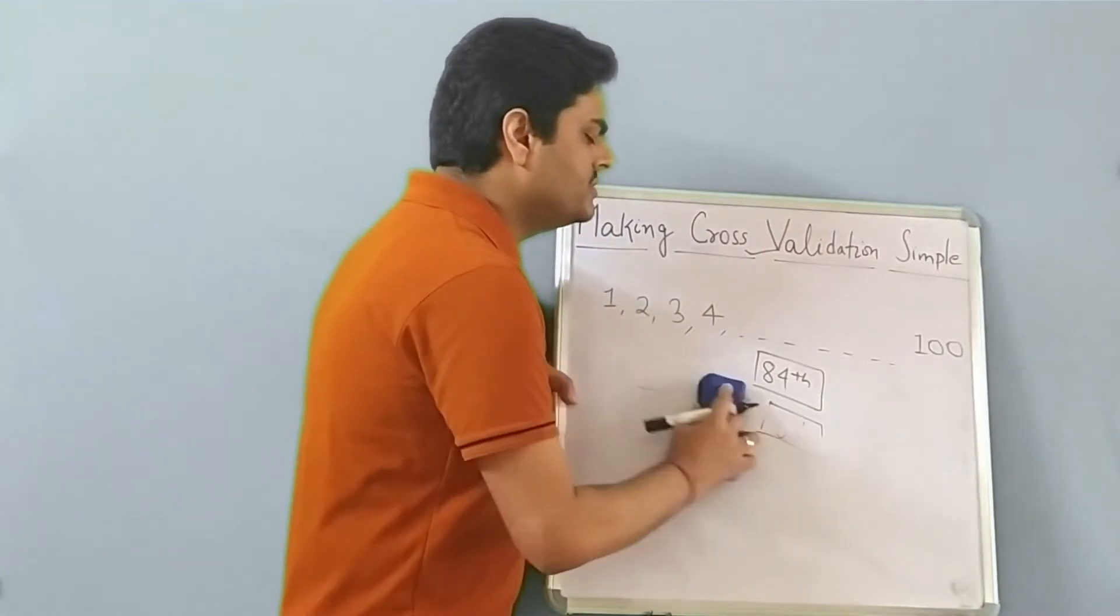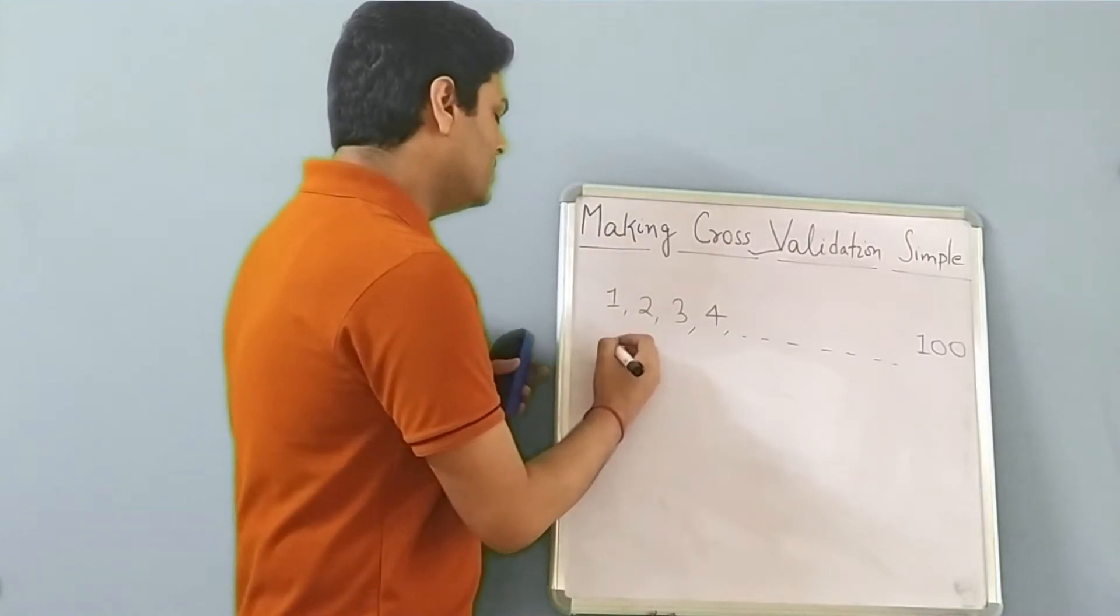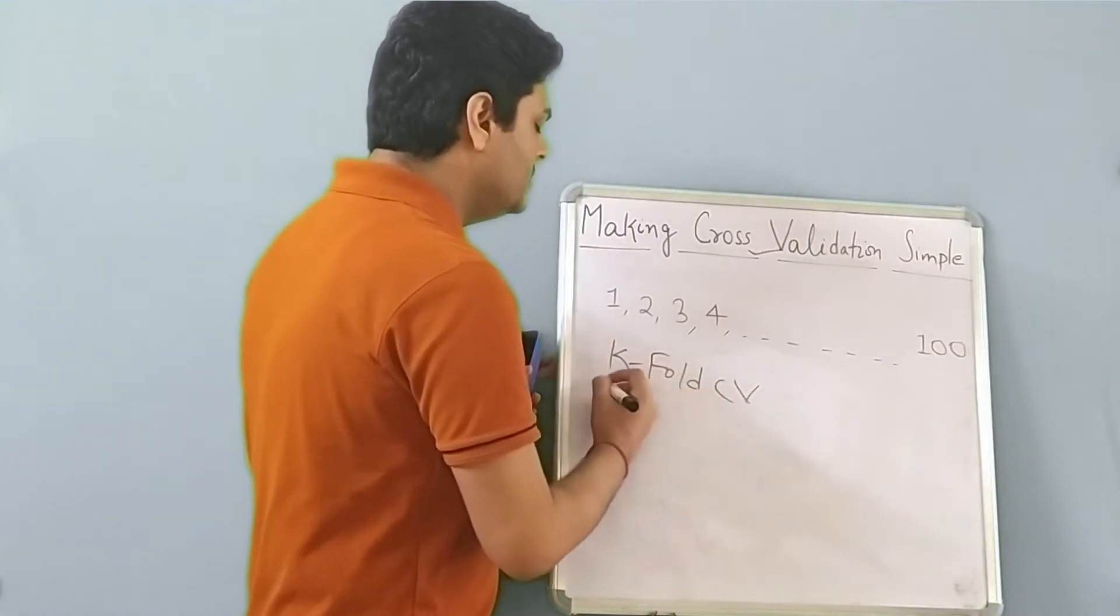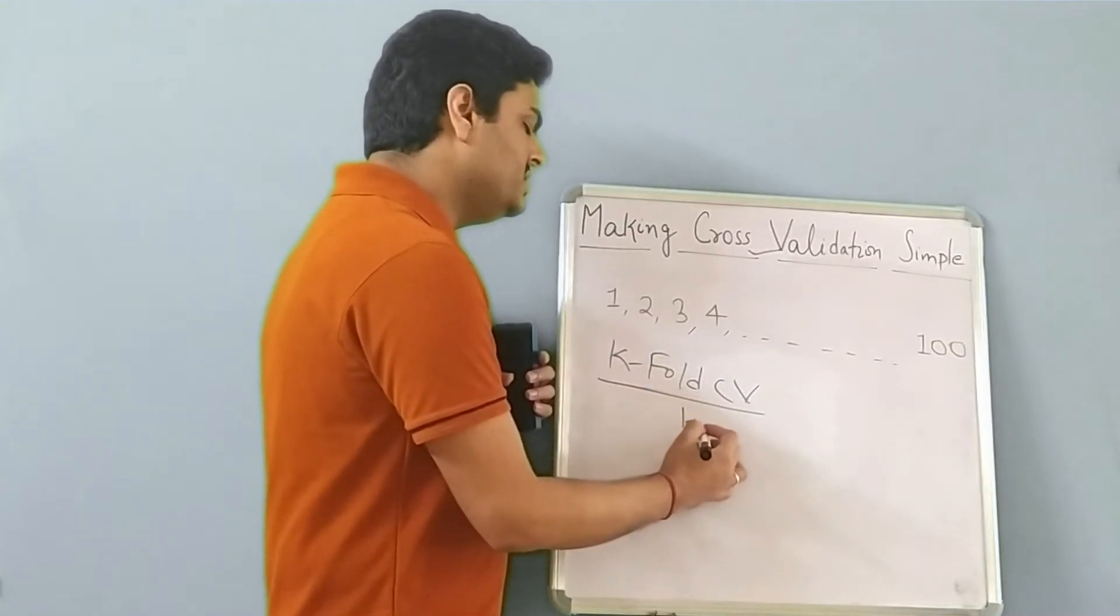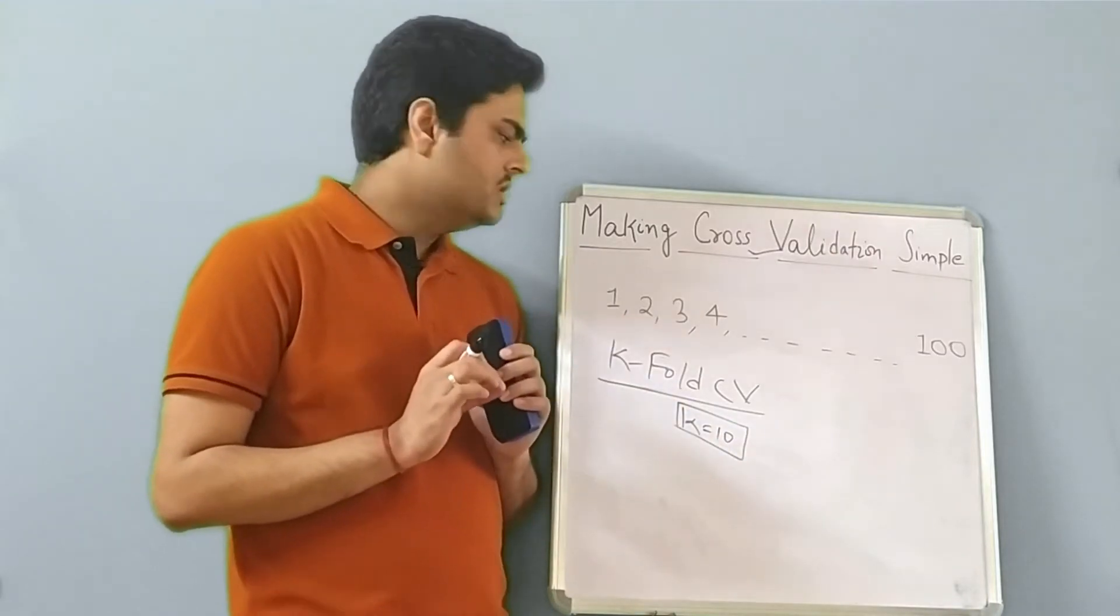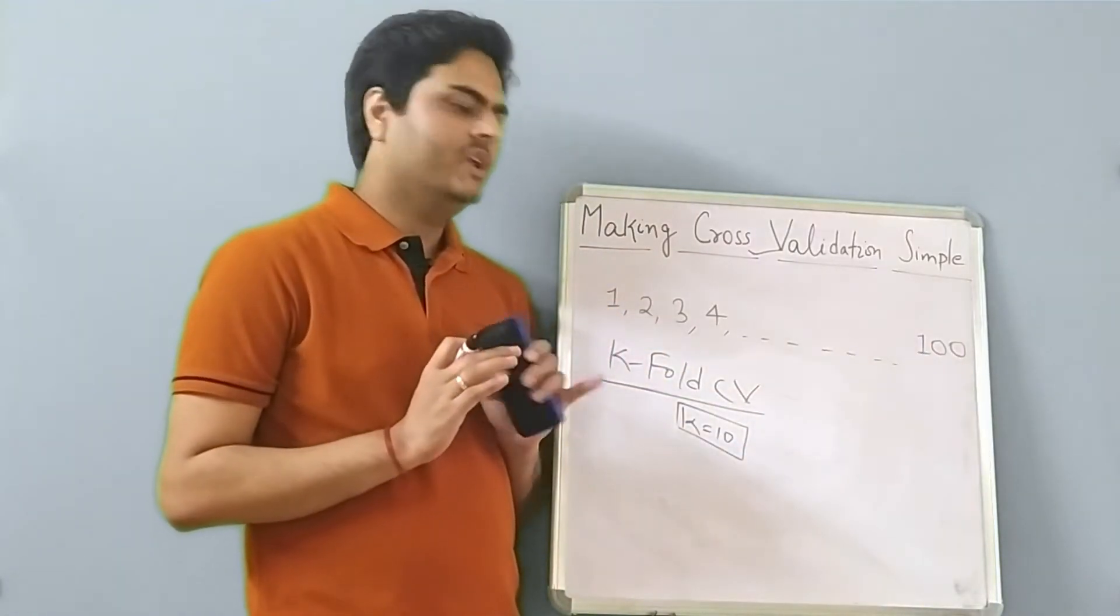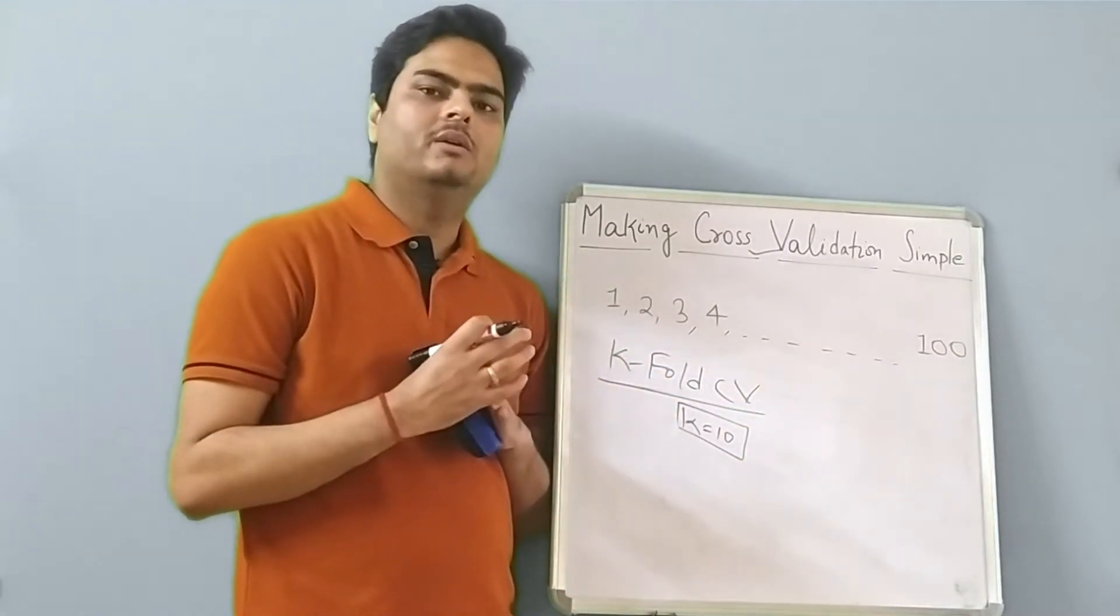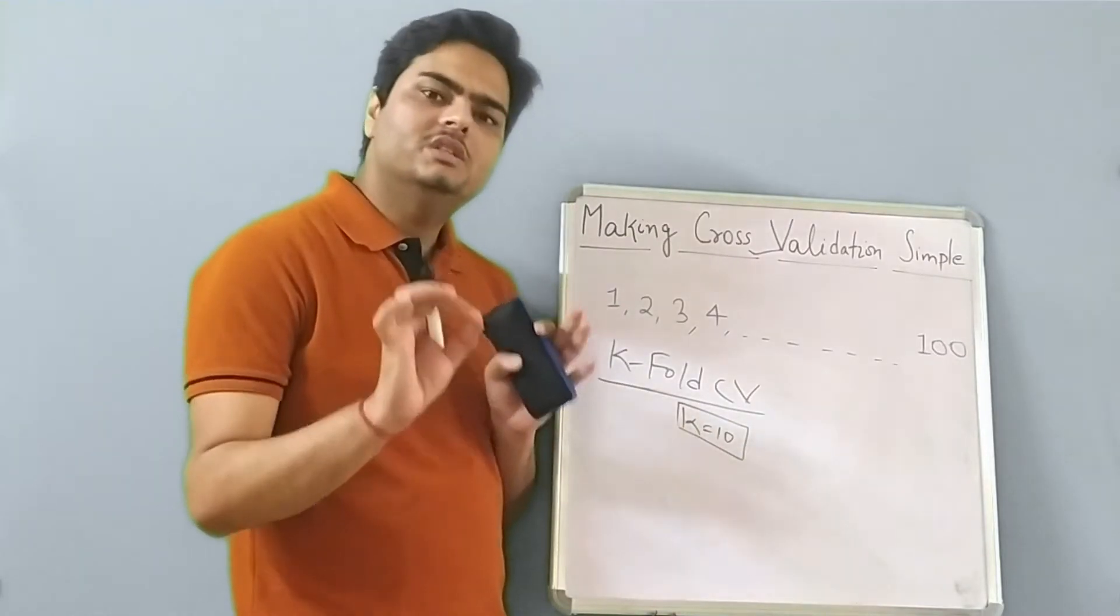All of you would have heard of something known as K fold cross validation. So what is K fold cross validation? K fold CV. So in K fold CV, K stands for an integer. Let's say in our case, for simplicity, K is 10. So what will happen in this approach is the 10 buckets of data will get created from this main data, 10 buckets of data will get created from this main data randomly selected. So there will be how many records in each bucket, 10 records in each bucket.